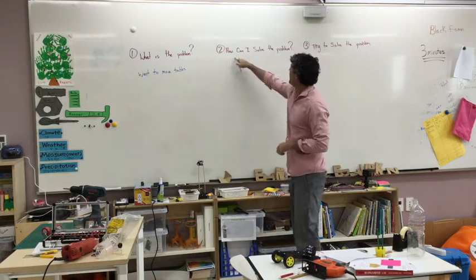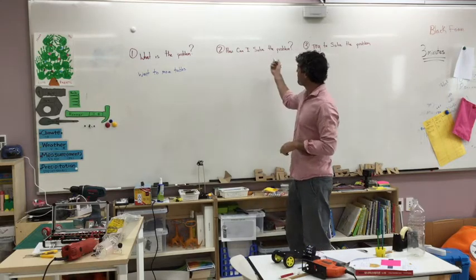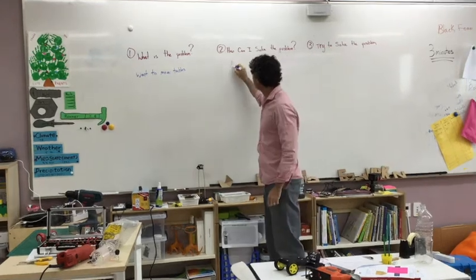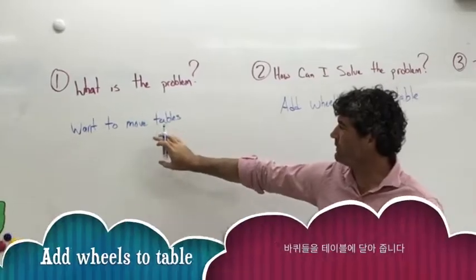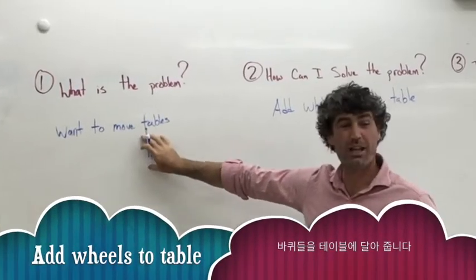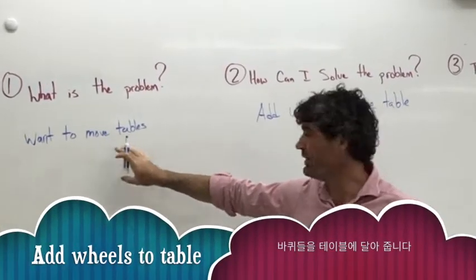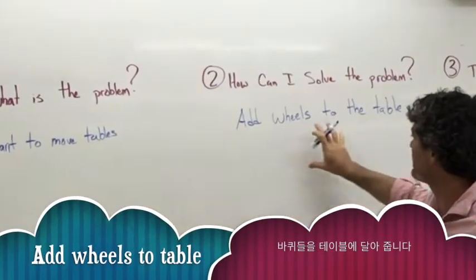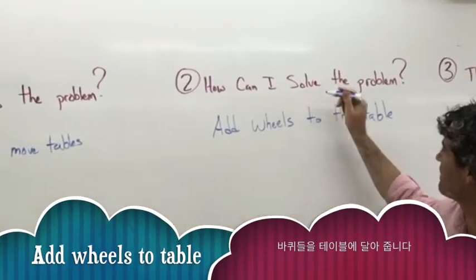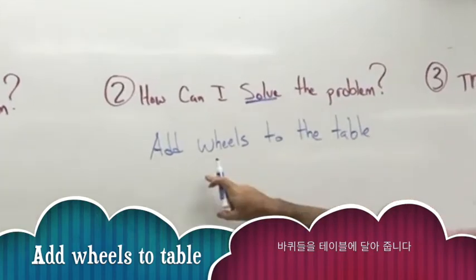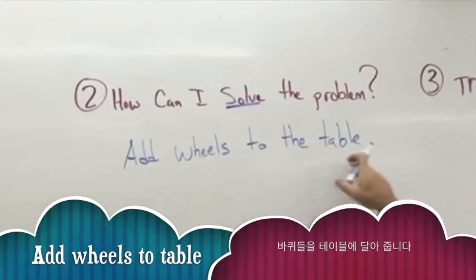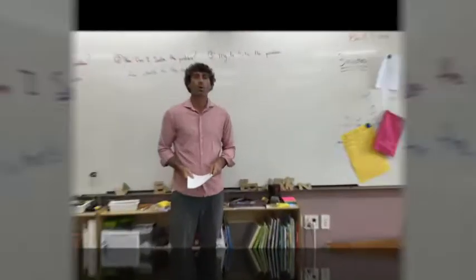So how can I solve the problem? I want the tables to move. My solution — how I'm going to solve the problem — I'm going to add wheels to the table.